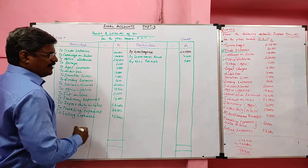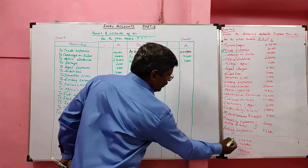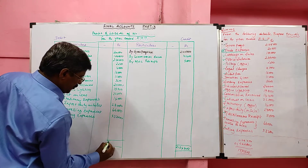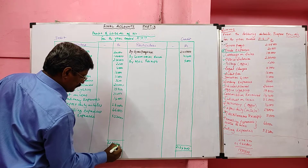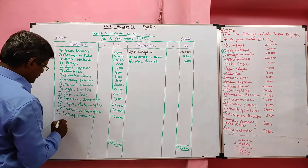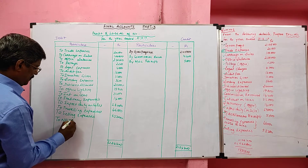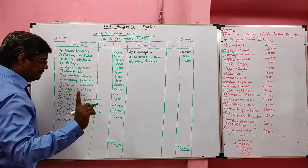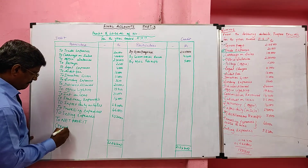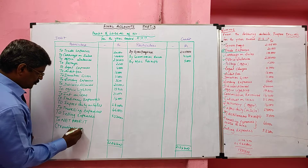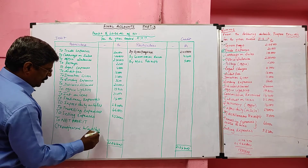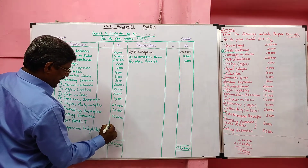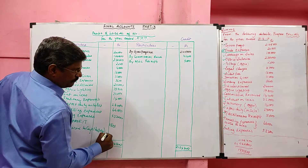Now I am going to balance this account. In this problem, the credit total is heavier than the debit total. The credit total I have already calculated is 21,24,400 rupees. After totaling the debit side expenses, the remaining value is called net profit. For net profit we should not write 'c/d b/d' — net profit is transferred to the capital account. The value I have obtained is 15 lakh 1,600 rupees.